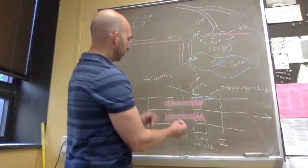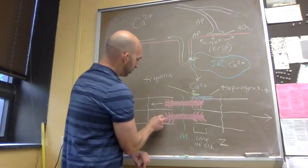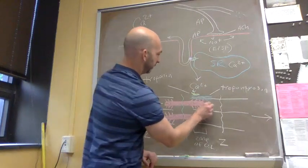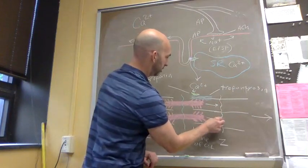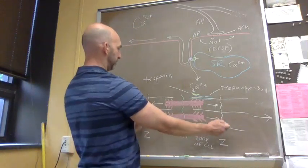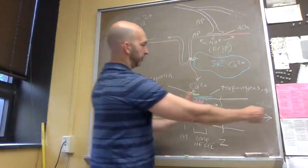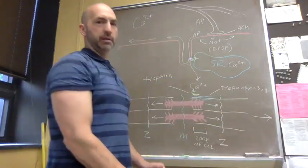What's going to happen is the thick filament is going to pull past the thin filaments in towards the Z-lines like so. That means the thin filaments will actually get closer together here—we're taking our Z-lines and pulling them inward.